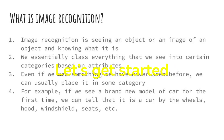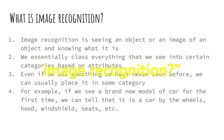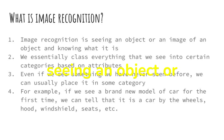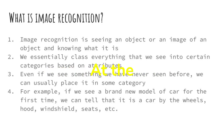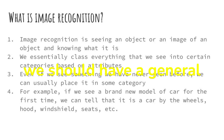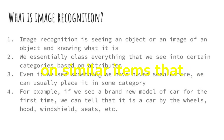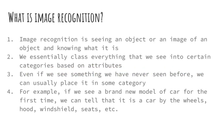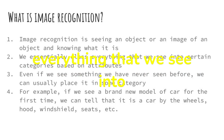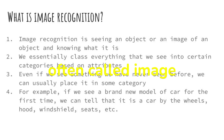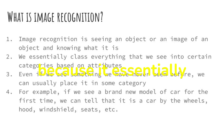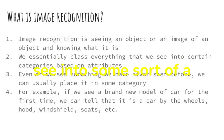Let's get started with: what is image recognition? Image recognition is seeing an object or an image of that object and knowing exactly what it is. At the very least, even if we don't know exactly what it is, we should have a general sense of what it is based on similar items that we've seen. Essentially, we class everything that we see into certain categories based on a set of attributes. That's why image recognition is often called image classification, because it essentially groups everything that we see into some sort of a category.